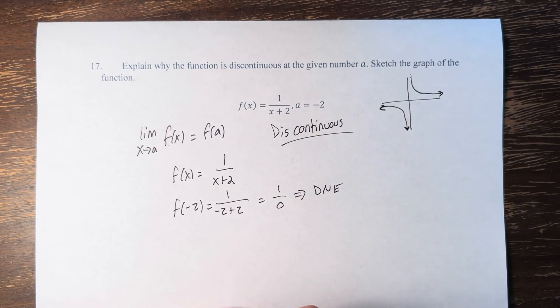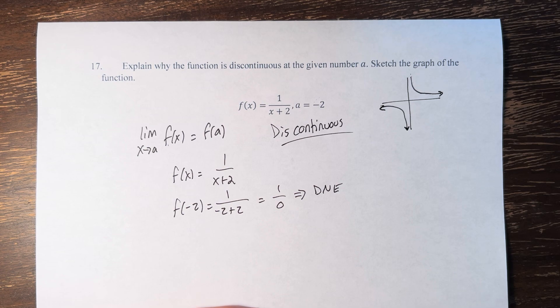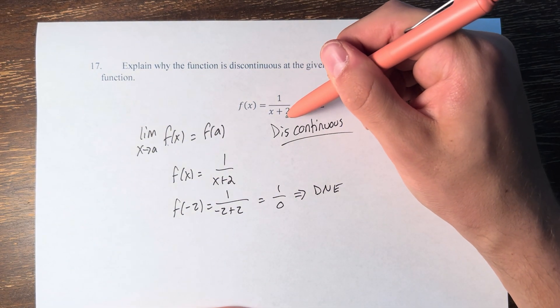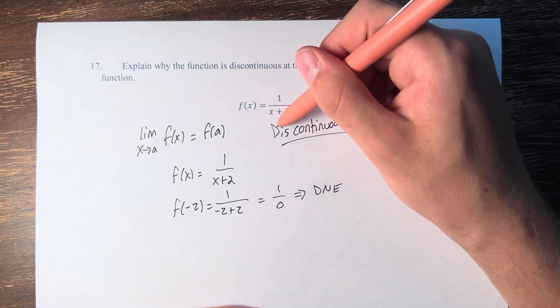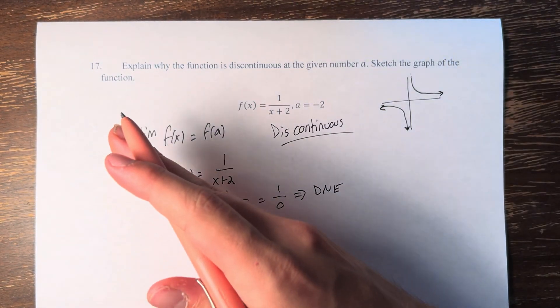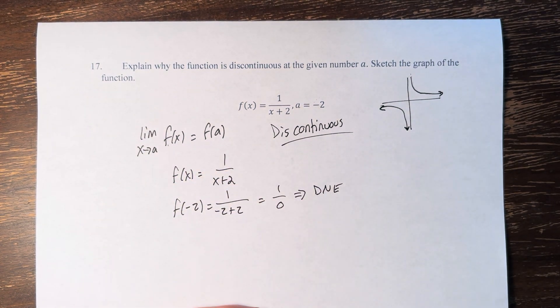And to add 2, we know, is a transformation. It's a shift. It's being done within the function. It's not 1 over x plus 2 after it. It's 1 over x plus 2. Therefore, it's to the left and right. And it's positive, so it's to the left.